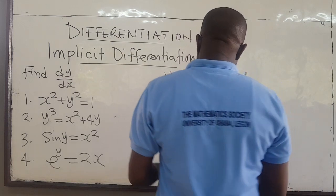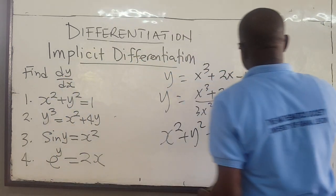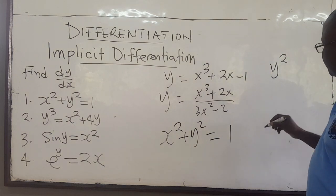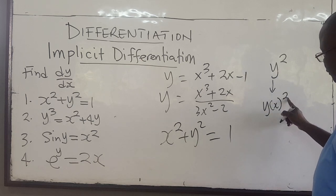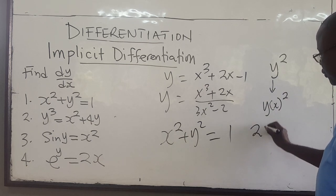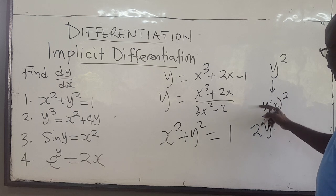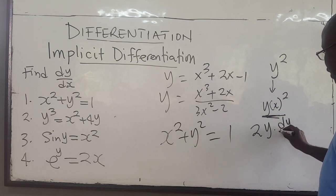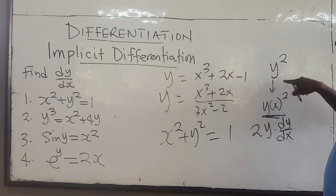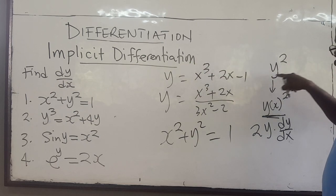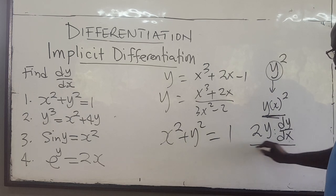We know how to find the derivative of x squared, and we know how to find the derivative of 1. Those are easy. How do you find the derivative of something like y squared? You consider y squared, treating y as a function of x. You apply the power rule first — this gives you 2y. Then you have to multiply by the derivative of what's inside, which is dy/dx, because y itself is a function of x. So the derivative of y squared is 2y times dy/dx.